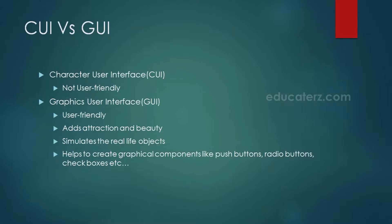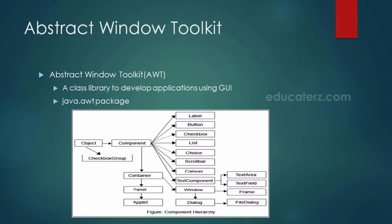GUI also helps to create graphical components like push buttons, radio buttons, check boxes and so on. Coming to the Abstract Window Toolkit, it represents a class library to develop applications using GUI. The java.awt package contains all the classes and interfaces used to develop GUI and lets users interact in a more friendly way with the application. The class hierarchy shows Object as the super class, containing CheckboxGroup and Component, and under Component we have classes like Label, Button, Checkbox and so on.